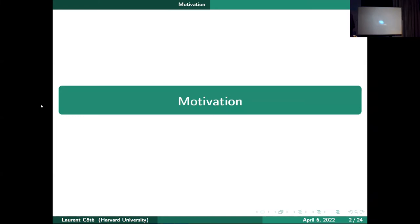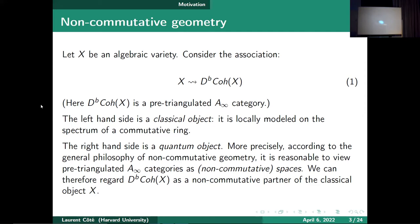Let's begin with motivation. Take X to be an algebraic variety. To this algebraic variety I can associate an object called D^b Coh(X). I want to think of D^b Coh as a pre-triangulated infinity category, or if you like, a dg category. The left-hand side here is a classical object — locally modeled on the spectrum of a commutative ring. The right-hand side I like to say is a quantum object, referring to the general philosophy of non-commutative geometry, which says it's reasonable to view pre-triangulated infinity categories as spaces — non-commutative spaces. We can therefore regard D^b Coh(X) as a non-commutative partner of the classical object X.